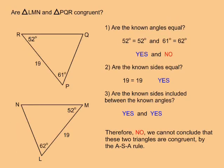In this example, are triangle LMN and triangle PQR congruent? Question 1: are the known angles equal? No. Both triangles have a 52 degree angle, but where one has a 61 degree angle, the other has a 62 degree angle — the known angles are not equal. Question 2: are the known sides equal? Yes, both triangles have a 19 unit side. Question 3: are the known sides included between the known angles? Yes, in both cases the 19 unit side is included between the two known angles. But because the known angles are not equal, we cannot conclude that these two triangles are congruent by the ASA rule.